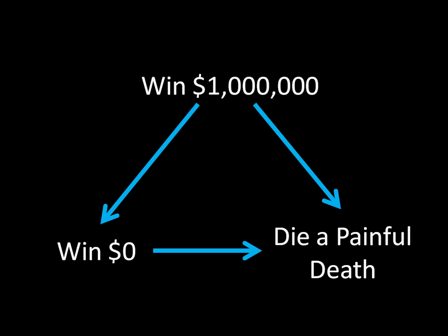This transitivity is exactly as you might remember it from a math class in junior high or early high school. If A is greater than B, and B is greater than C, then A should be greater than C as well. That's exactly what's going on here — winning a million dollars is greater than winning zero dollars, winning zero dollars is greater than dying a painful death, so winning a million dollars is preferred to dying a painful death.